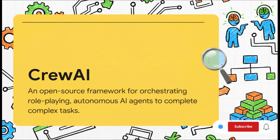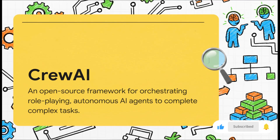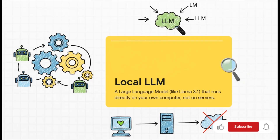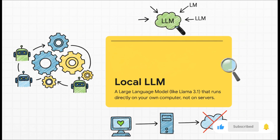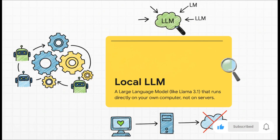The best way to think about Crew AI is like it's the manager, or maybe the conductor of an orchestra. It's a framework that lets you set up different AI agents, give each one a specific role and a job to do, and then orchestrates all of them so they can work together as a team to handle a really complex task. But where do the brains for these agents come from? That's where a local LLM fits in. An LLM, or large language model, is the AI model that does the thinking. A local LLM, like the super popular Llama 3.1, is one you can actually download and run right on your own computer — no cloud, no APIs, just pure AI power sitting on your machine.